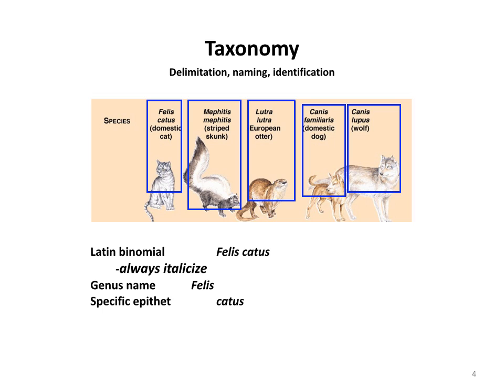A genus is a more inclusive group than the species. The species includes all populations; the genus usually includes more than one species. If the genus is already known in context, it can be abbreviated — for example, F. catus — still italicized. For the striped skunk, it's Mephitis mephitis, a case where the genus and species names are the same word. That happens sometimes.